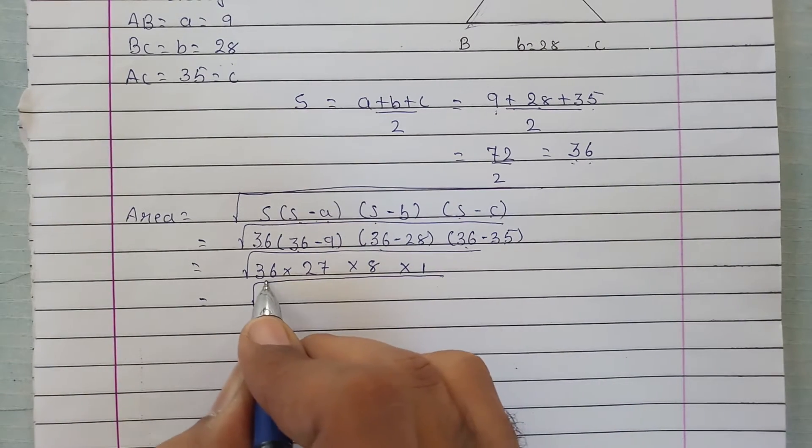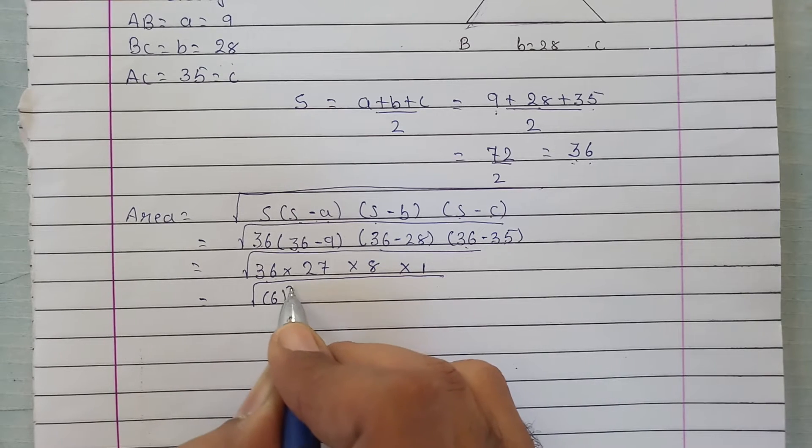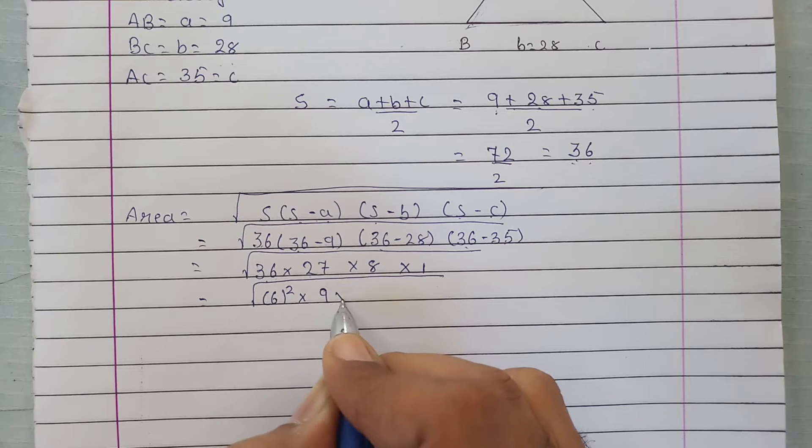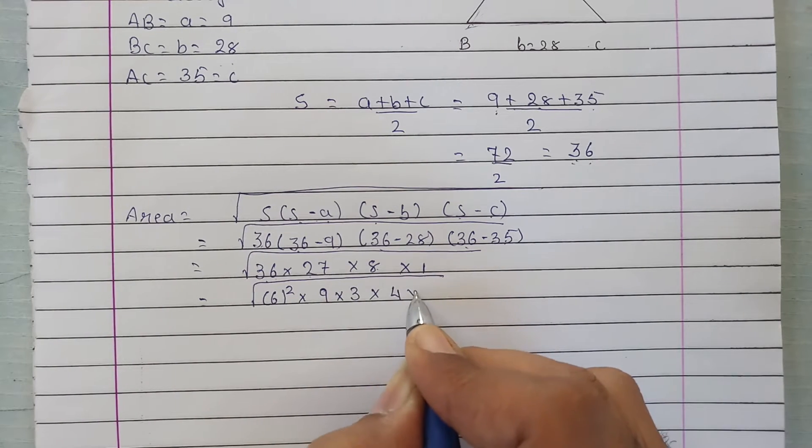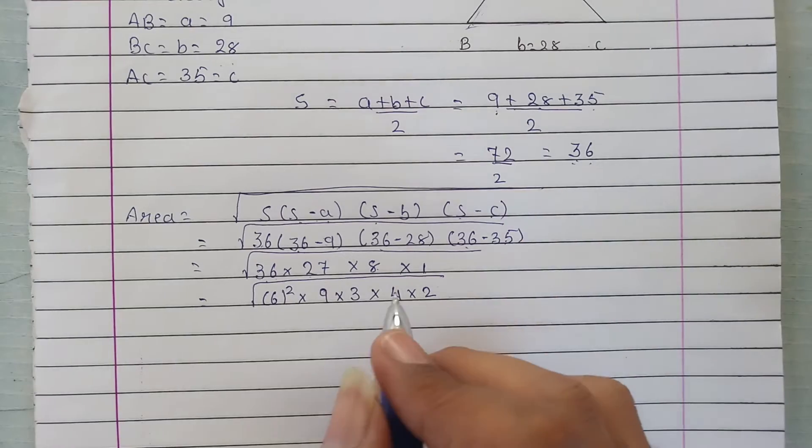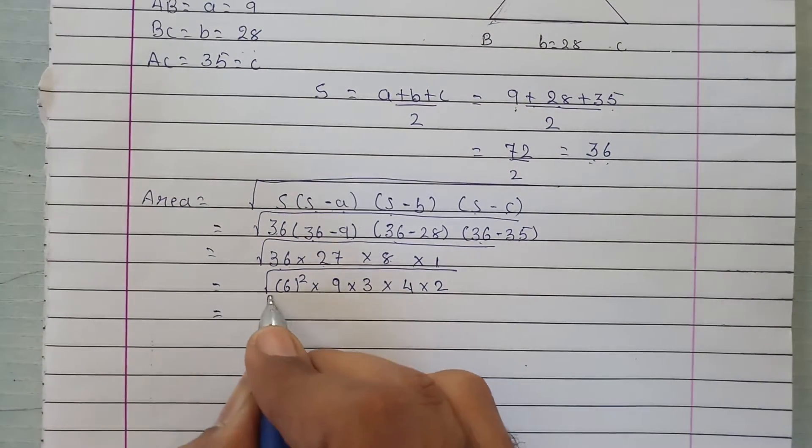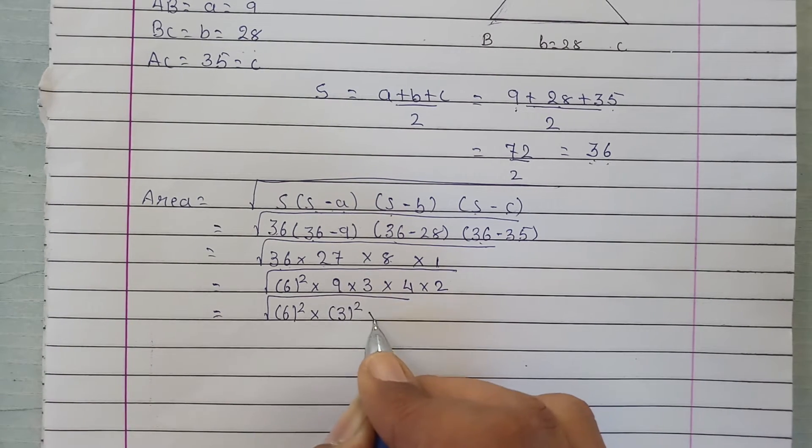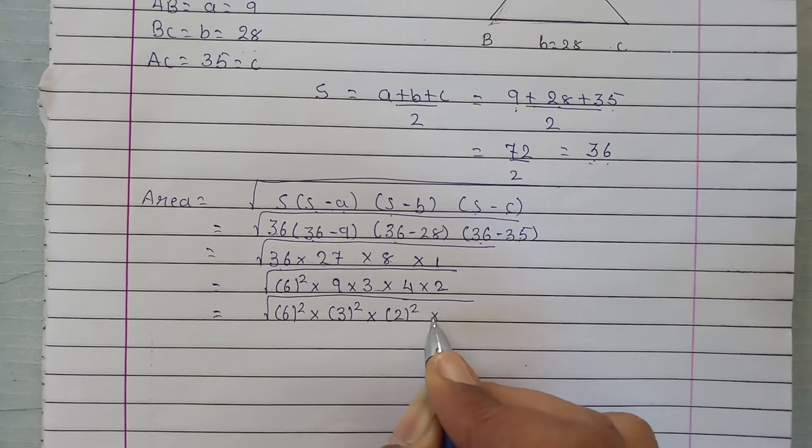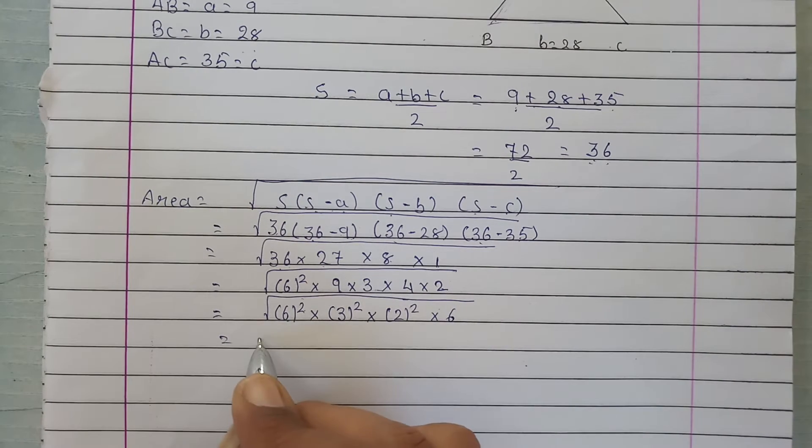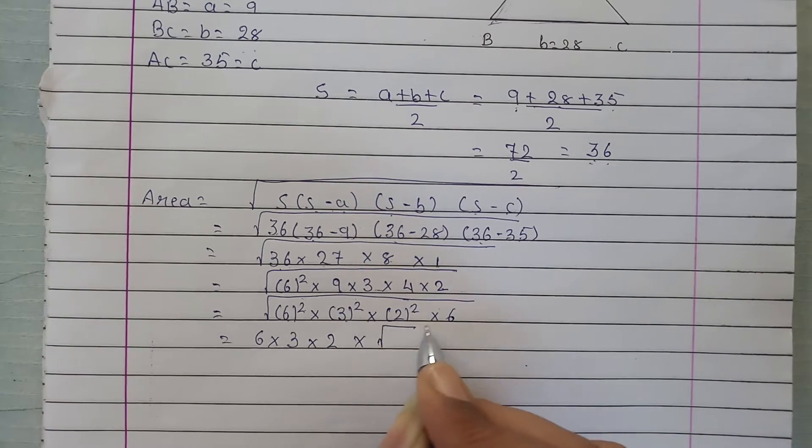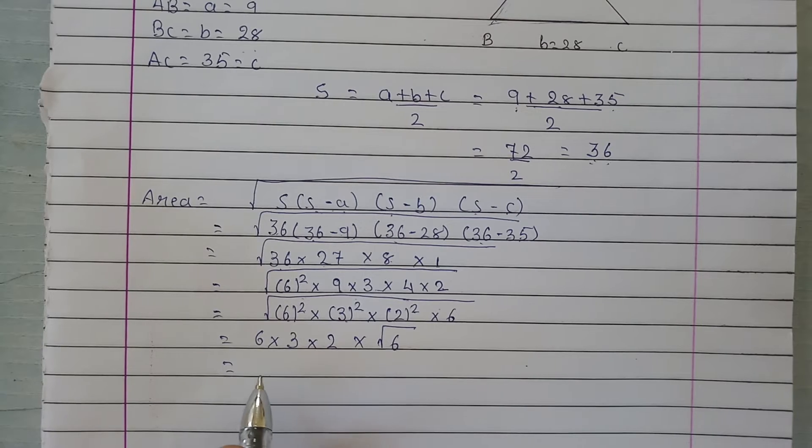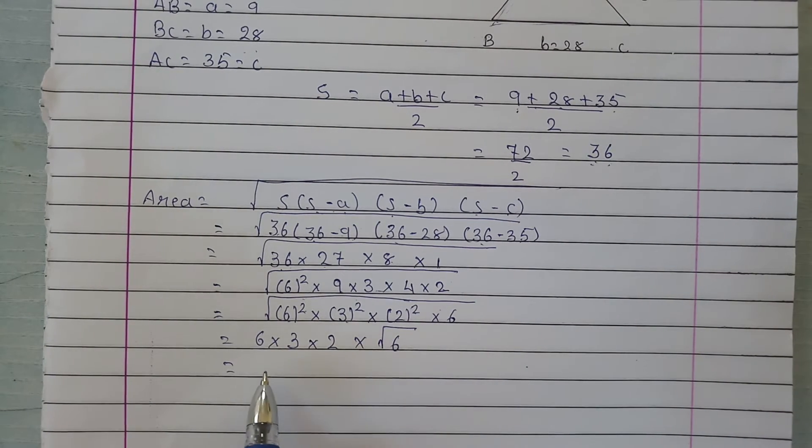On solving it further, 36 can be written as 6 squared, 27 can be written as 9 times 3, 8 can be written as 4 times 2, and 1 remains as is. So we have square root of 6 squared times 3 squared times 2 squared times 6. Taking square roots: 6 times 3 times 2 times root 6, which is 36 root 6.